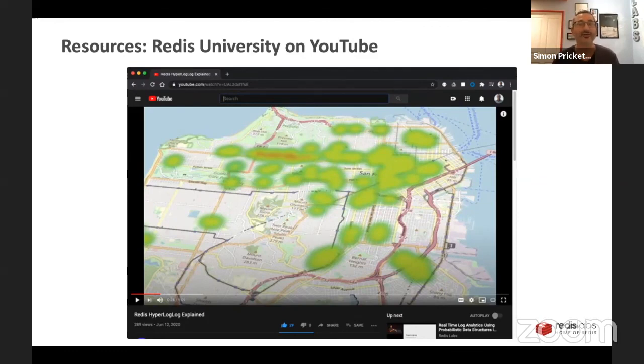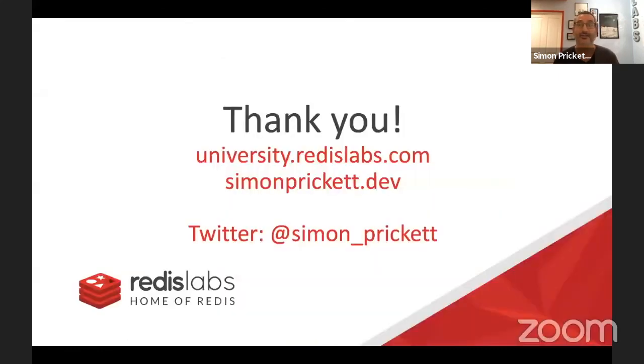So that was really all I had. The takeaway really quickly is if you find yourself doing something where you have to count lots of things, and the lots of things might be a huge number of things, or they might be very big things, or a huge number of very big things, then you might want to consider swapping in a hyperloglog for a set or a database table, traditional database table, in order to avoid runaway storage requirements and potentially solve a privacy problem. And that's it. Thank you very much.